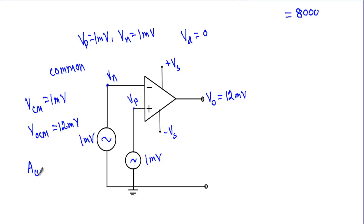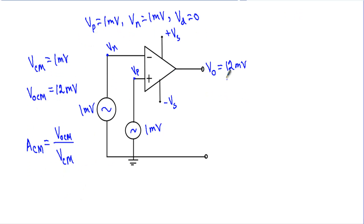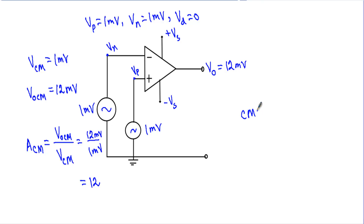Now I can calculate the common mode gain: ACM equals common mode output voltage VOCM divided by common mode input voltage VCM. VOCM equals 12 millivolt and VCM equals 1 millivolt, therefore the common mode gain ACM equals 12.